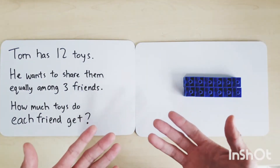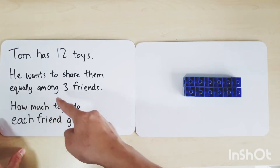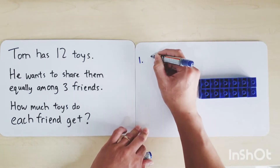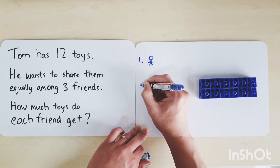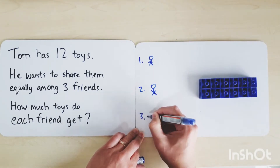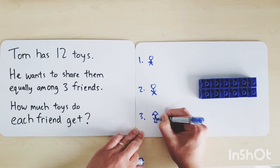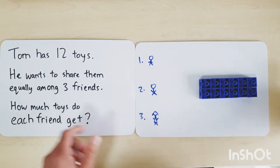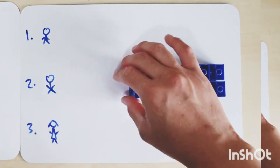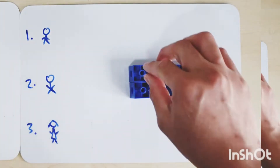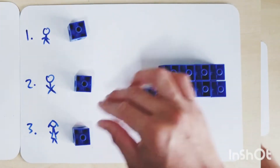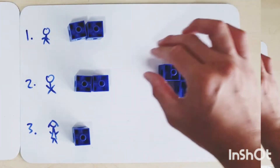Now we're going to arrange them to share equally among three friends. So I'm going to draw three friends out: one, two, and three. How do we share them equally? Let's give them one each. You have one, you have one, and you have one.